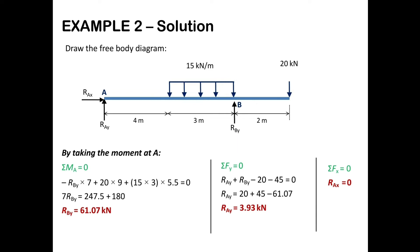We apply the equations of static equilibrium. Taking the moment at point A, clockwise positive and anticlockwise negative: RBY generates an anticlockwise moment at a distance of 7m, so −RBY × 7 + 20 × 9 + (15 × 3) × 5.5 = 0. The UDL acts at the centroid of the 3m span, which is at 1.5m from its start, giving a distance of 4 + 1.5 = 5.5m from A. Solving gives RBY = 61.07 kN.